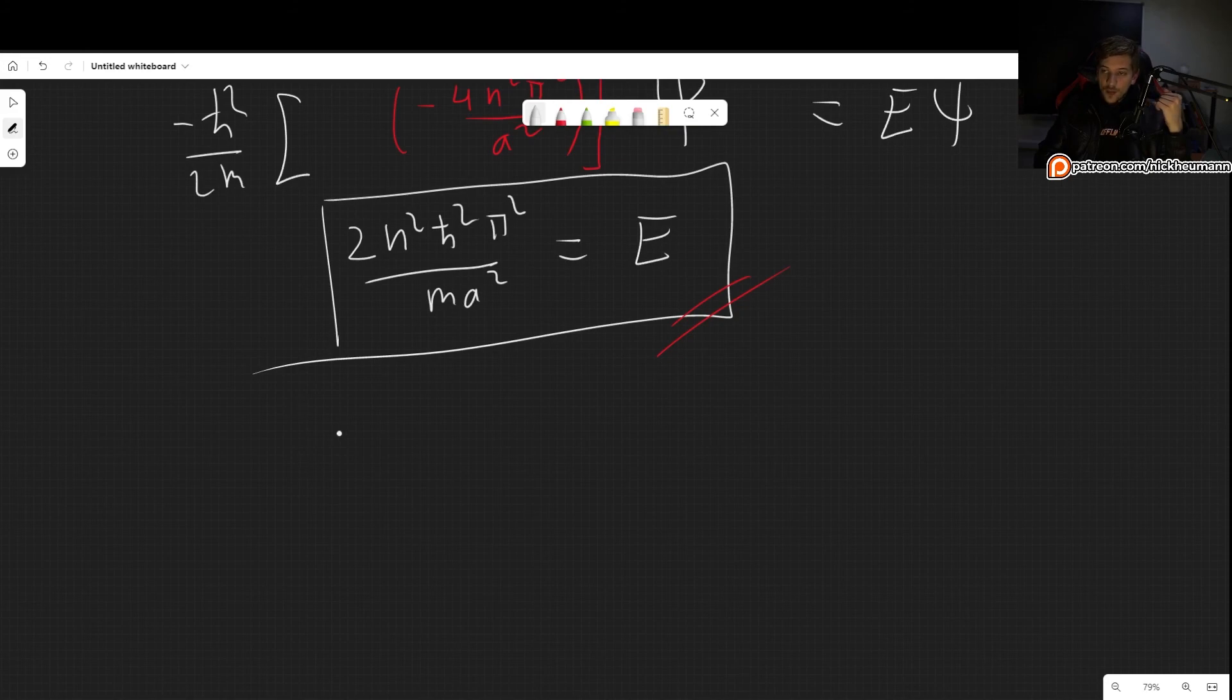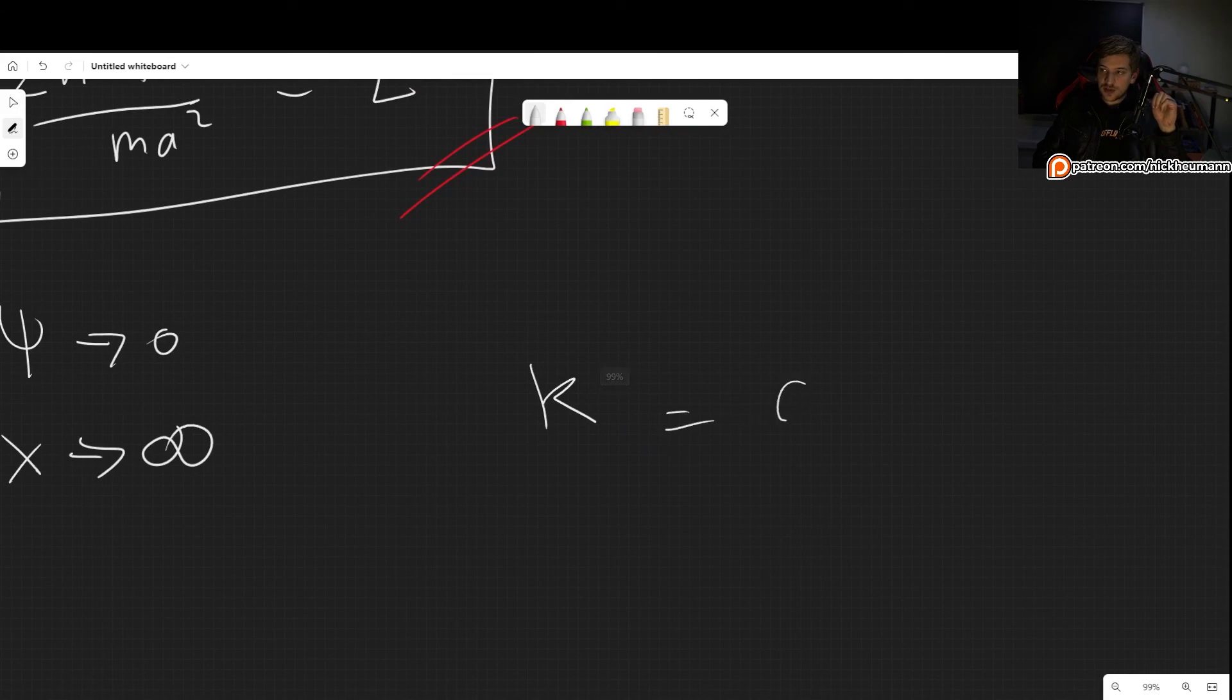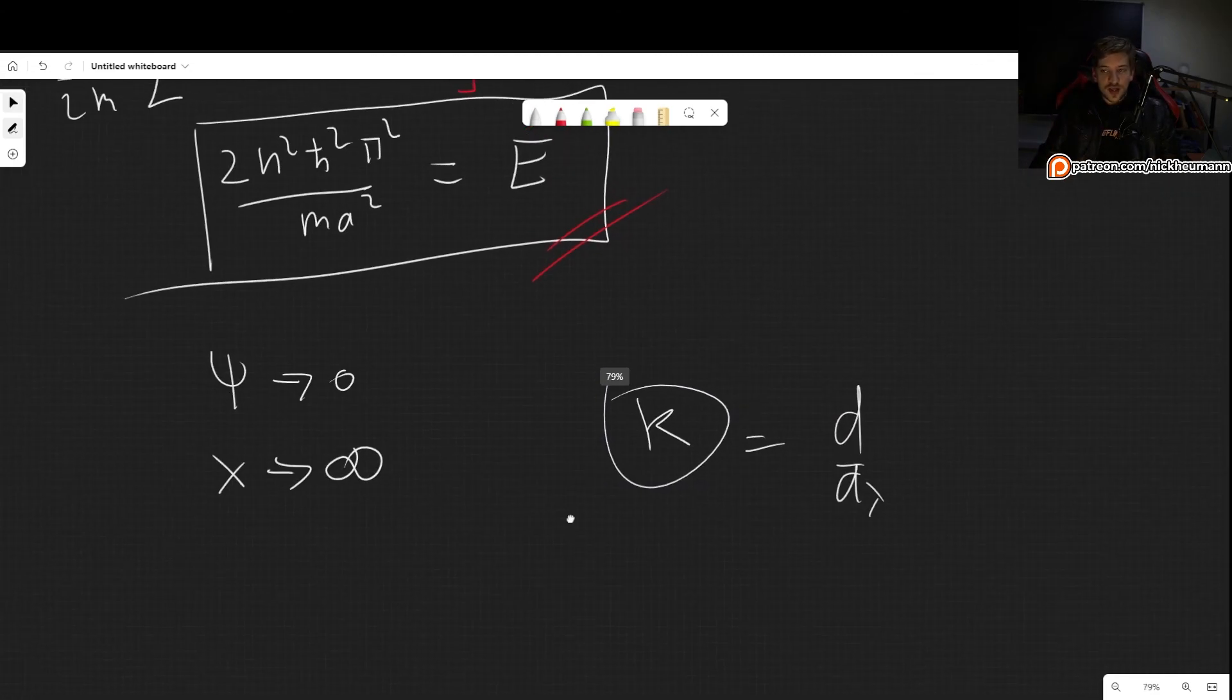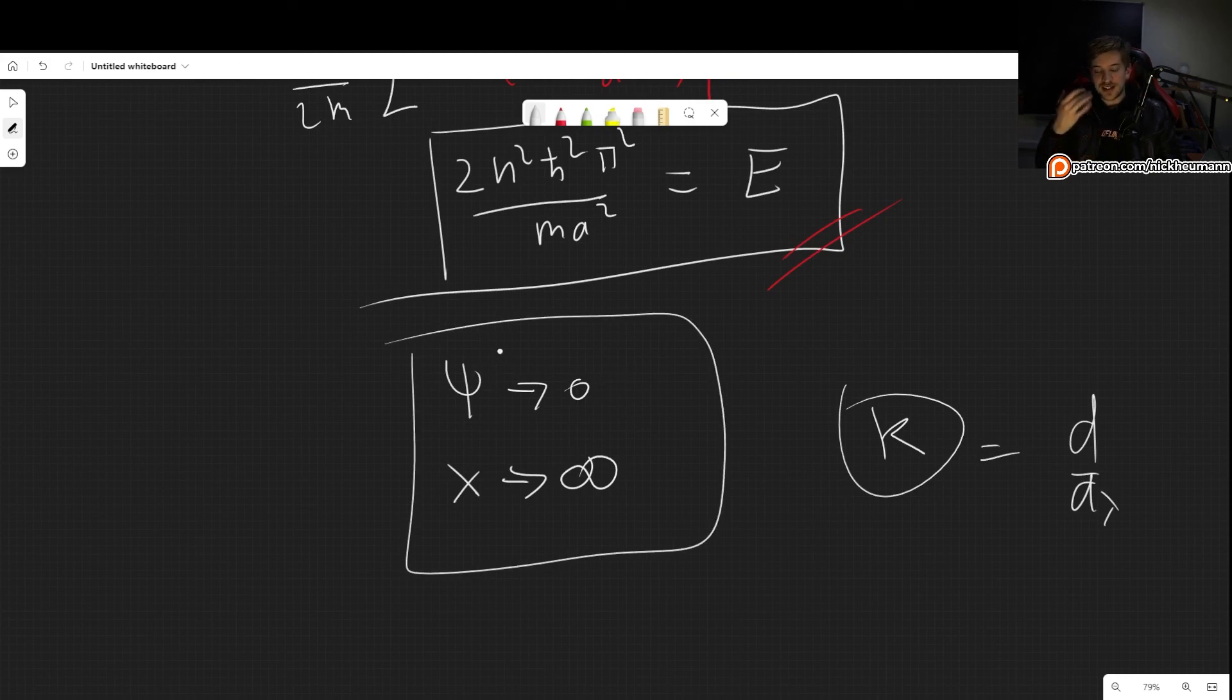The reason why this fails is because what we required in the previous problem to show that there couldn't be degenerate bound states was that we needed ψ to go to 0 as x went to infinity, but that doesn't happen here. So that means that the constant k that we found in the previous video has nothing to do with k here. The k that we found that was equal to the derivatives, that k we couldn't determine it. So for that reason, the theorem doesn't hold. This is the important part: ψ doesn't go to 0 as x goes to infinity, which was one of the conditions that we found in the other video.